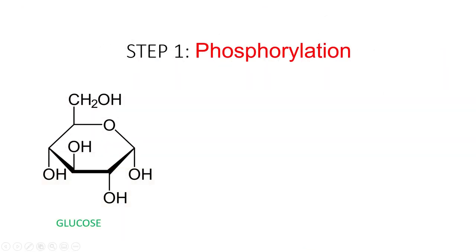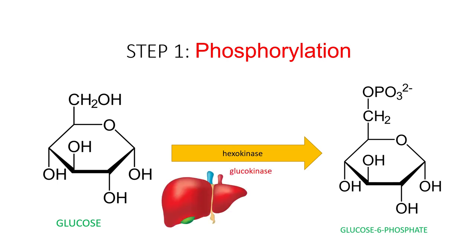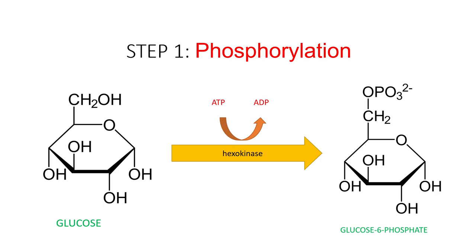The first step is a reaction in which glucose is phosphorylated to glucose-6-phosphate. The enzymes that catalyze this reaction are hexokinase or glucokinase. The main difference between these two enzymes is that glucokinase, which is found in the liver, has much lower affinity for glucose, and therefore it will be activated only when the concentration of glucose is very high. This reaction costs one ATP molecule, and it is important because it traps glucose inside the cell so glucose cannot leave.